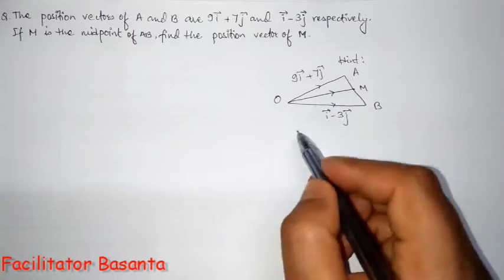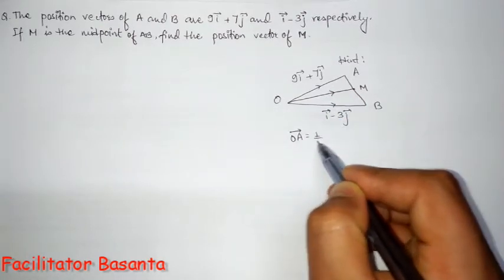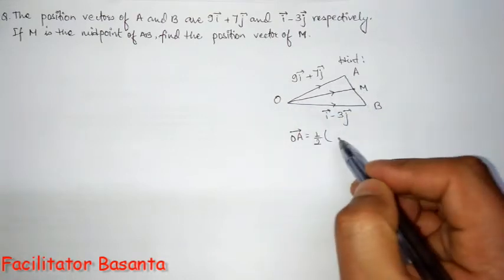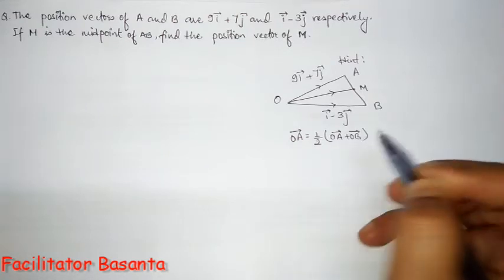That is, for this figure, OM vector will be half of the sum of the two position vectors of A as well as B. It's OA plus OB vector.